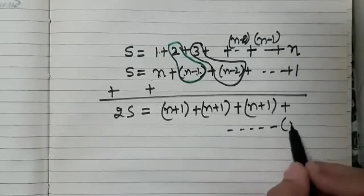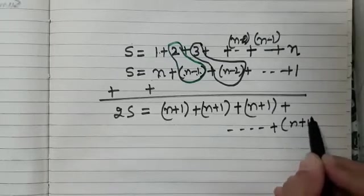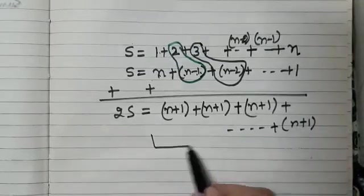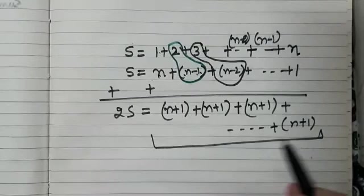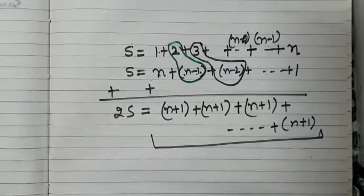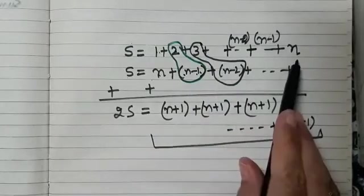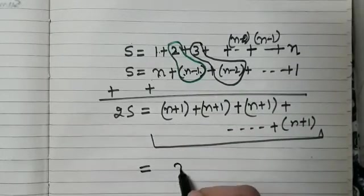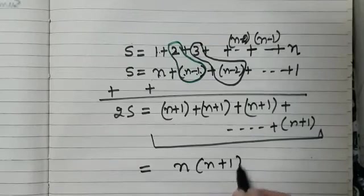we reach up to, again, the last term will be n plus 1. And how many such terms are there? How many terms are there? We were to find the sum of first n natural numbers. So that means these are the n number of terms. So this is equal to n into n plus 1.